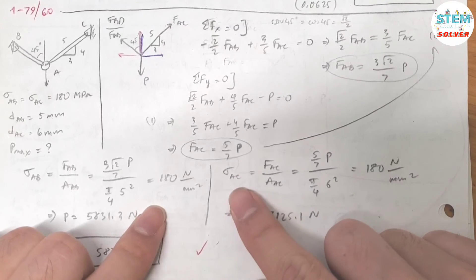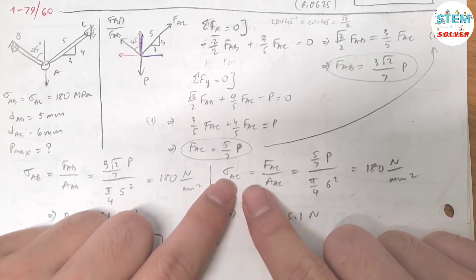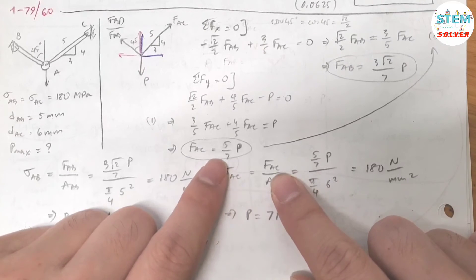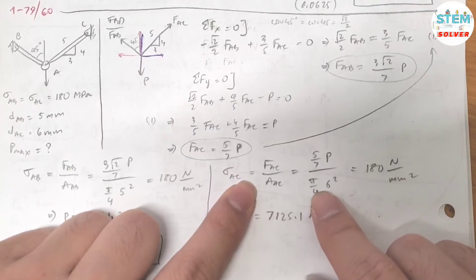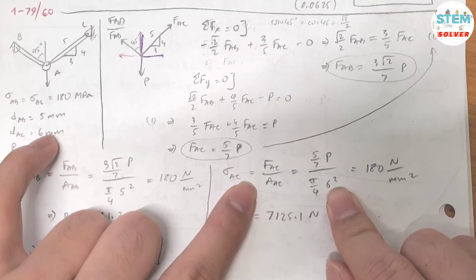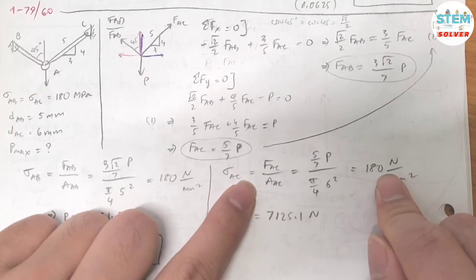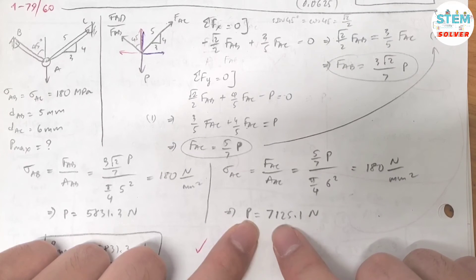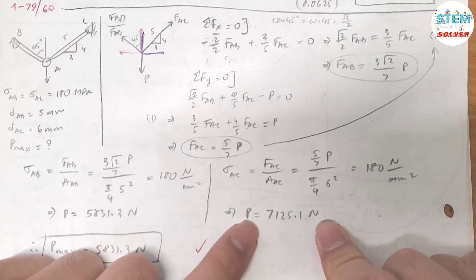For FAC, same thing. Force divided by area. FAC is 5 over 7 P divided by the area which is pi over 4 times 6 squared, equals 180 N per meter squared. You found out that P equals 7125 N.